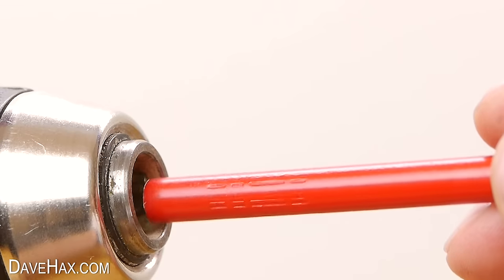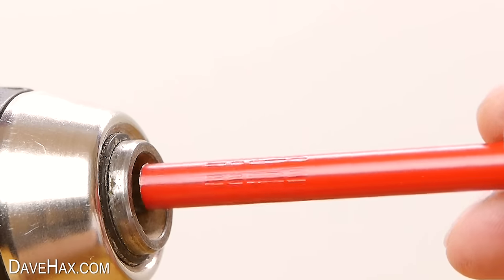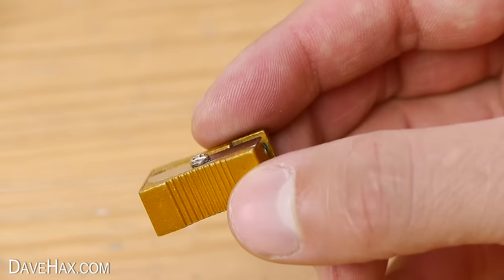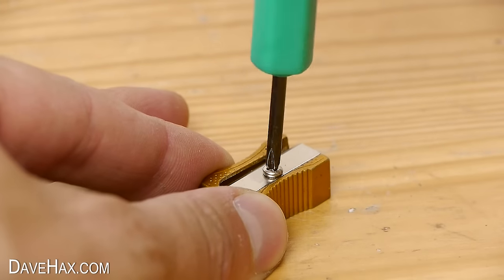So I wanted to attach the sharpener to the drill instead. I started by taking a metal pencil sharpener and I carefully removed the blade.